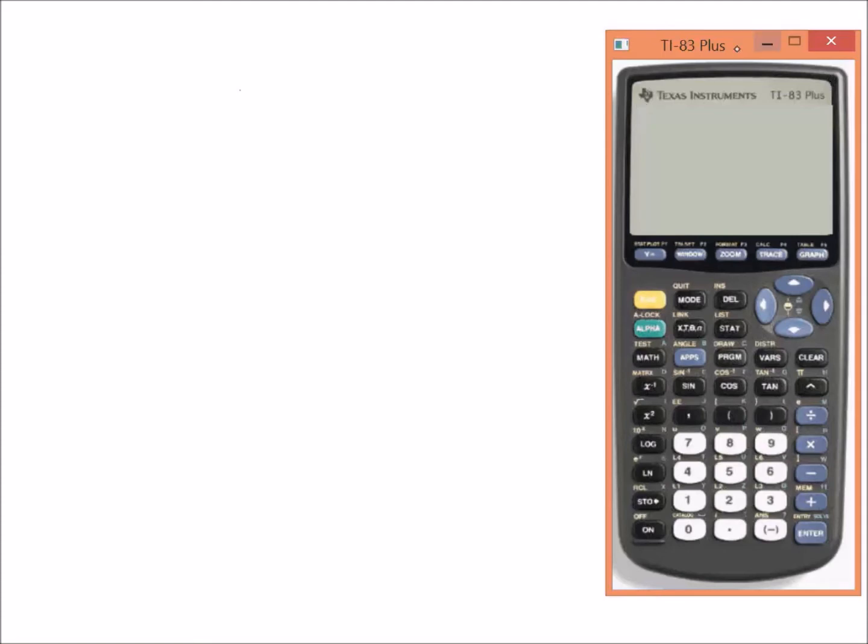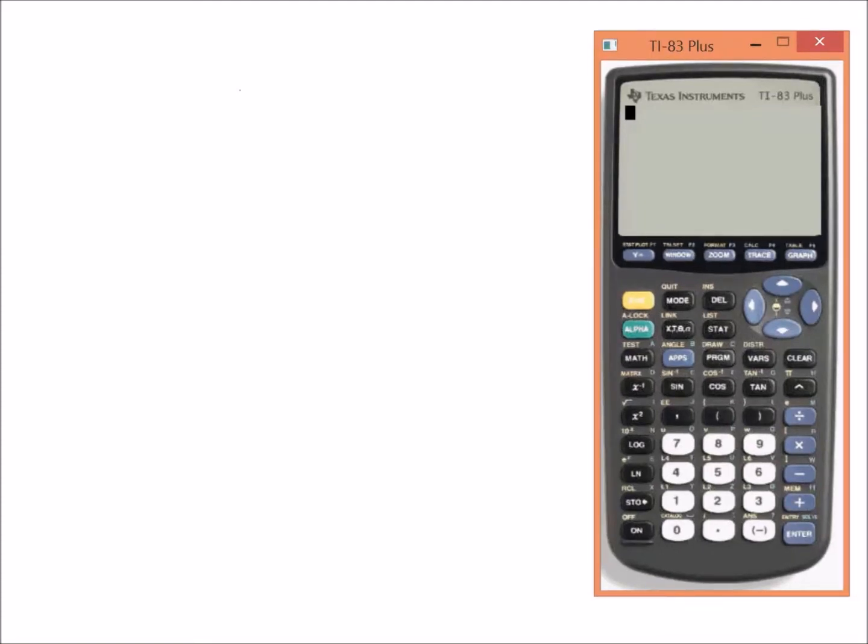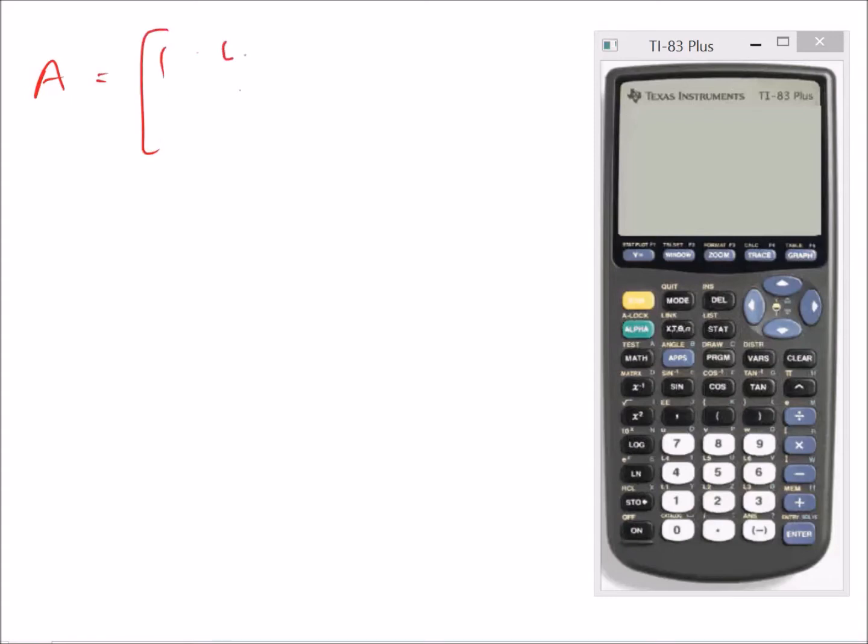And the calculator is going to be your best friend. So let's say we have two matrices A and B. So A is equal to this, and B is equal to... and the question says find AB, which of course, as you know, means A times B.